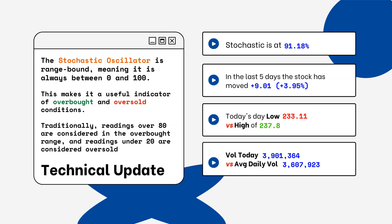You want to look for overbought and oversold conditions. Readings over 80% are considered overbought, and readings below 20% are considered oversold. You want to be aware of this when you're looking at a particular stock.